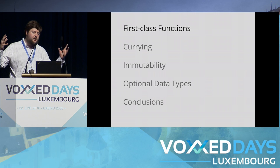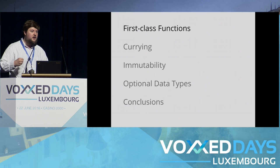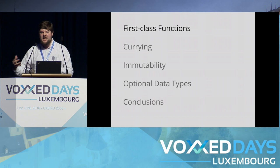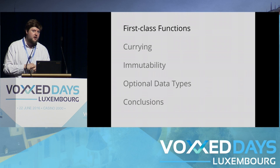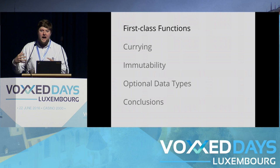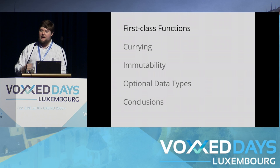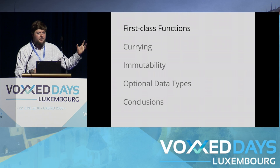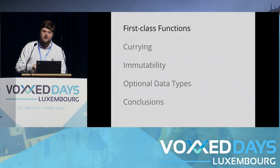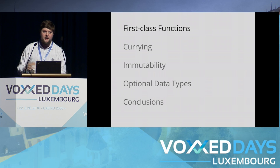I'm going to talk about four key concepts bringing ideas in from functional programming, focusing not so much on the concept itself, but more on how you can use them. I'm going to talk about first-class functions, currying, immutability, and the optional data type. Don't worry if you don't know what these terms mean — you will by the end of the talk.